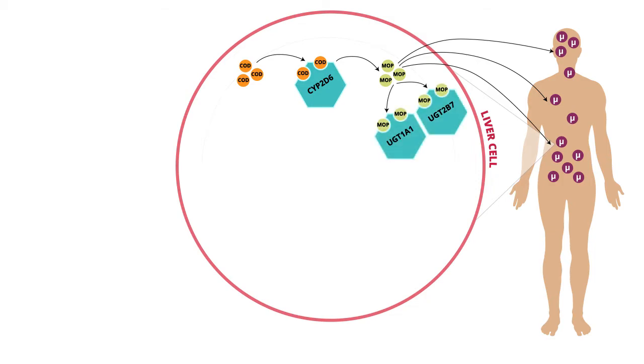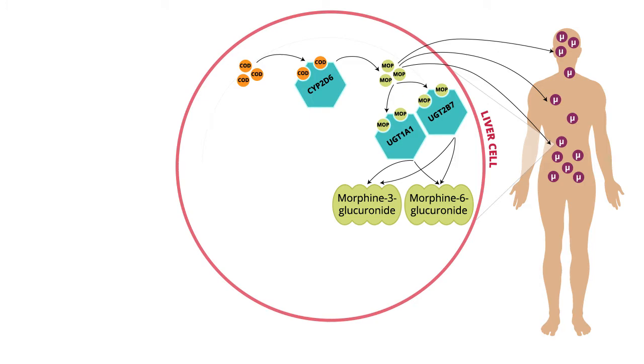Morphine may also be glucuronidated in the liver, leading to the byproducts morphine-6-glucuronide and morphine-3-glucuronide. Morphine-6-glucuronide is known to have analgesic activity in humans, whereas morphine-3-glucuronide is generally not considered to possess analgesic properties.